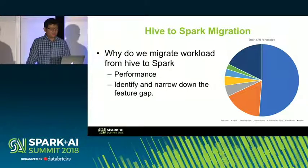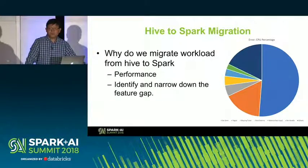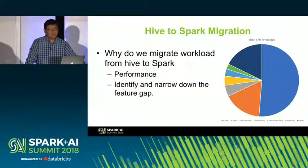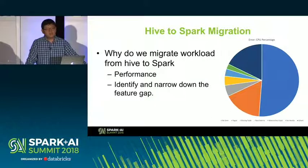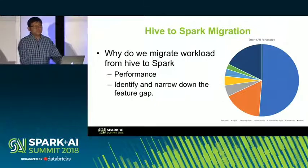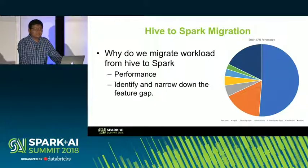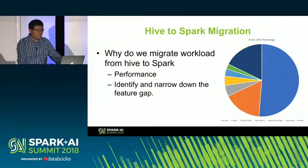Why do we want to make the migration work? There are two major reasons. One is that in Facebook, Hive is one of the major batch compute engines, and the workload actually doubles or triples every year. It's one of the biggest clusters in Facebook. We want to reduce resource usage. Spark, as a more advanced computation engine, is much better performance-wise, and it gives users more flexibility to write their own application logic. Saving resources is the basic initiative for the migration.